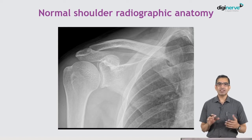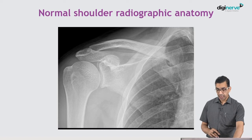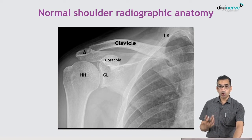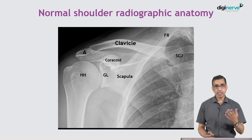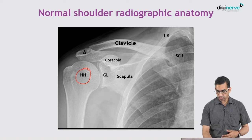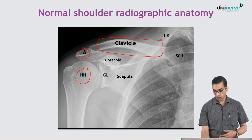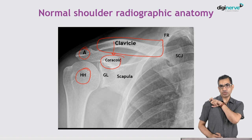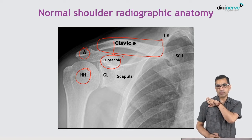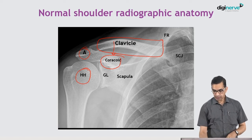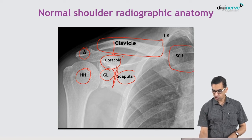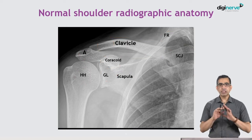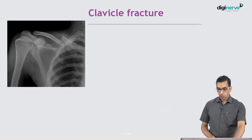Before we move on to fractures of the clavicle, we need to know the basic radiographic anatomy, because not all of you will be familiar. In this figure, starting from the humeral head — HH is the humeral head, A is the acromion, C is the clavicle, which will be our area of focus. This is the coracoid process just under the lateral end of the clavicle, projecting anterolaterally. This is the glenoid, the scapula, the scapula neck, the sternoclavicular joint, and this is the first rib.